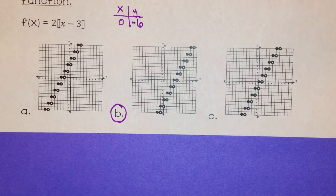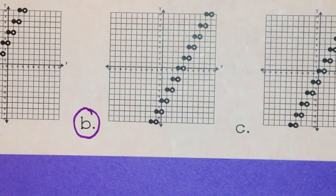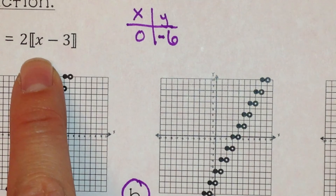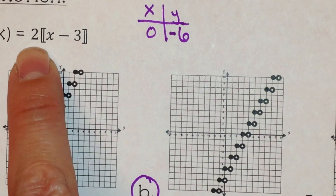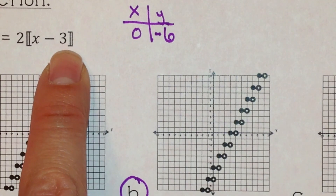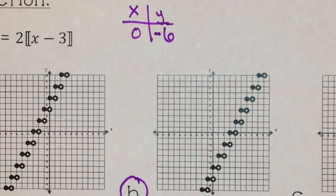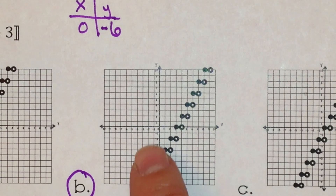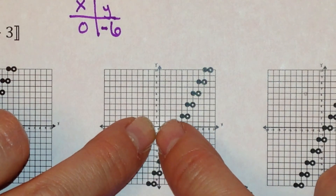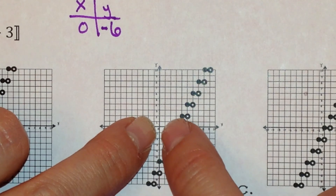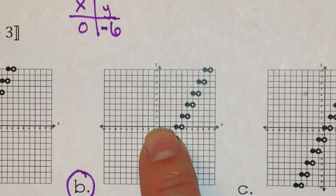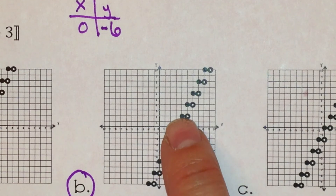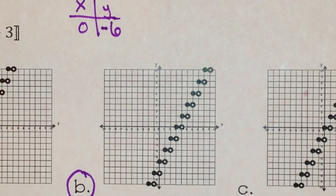Looking more closely at graph b, we can see that the height between steps increases by a factor of 2, and the graph moves 3 units to the right. The parent function's original step starts at a closed circle at 0 and goes to an open circle at 1. We can count that it has moved over 1, 2, 3 units to the right, confirming the translation. And the distance between steps did increase by a factor of 2.